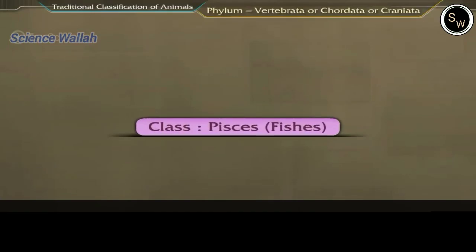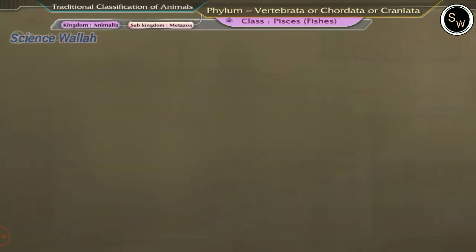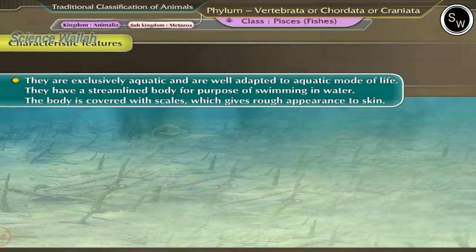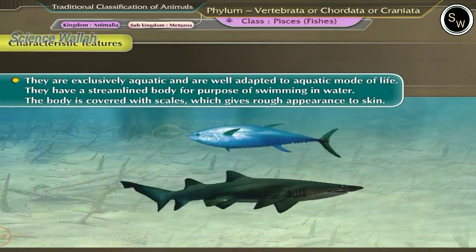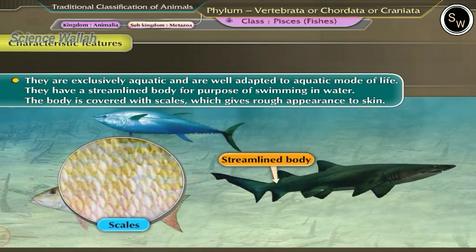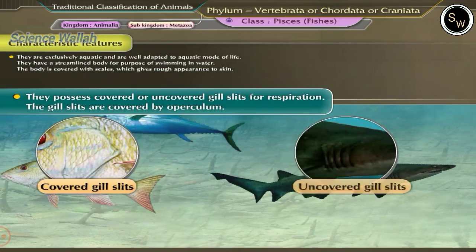Class Pisces: Fishes. The characteristic features of this class are: they are exclusively aquatic and well adapted to aquatic mode of life. They have a streamlined body for the purpose of swimming in water. The body is covered with scales, which gives a rough appearance to the skin. They possess covered or uncovered gill slits for respiration.